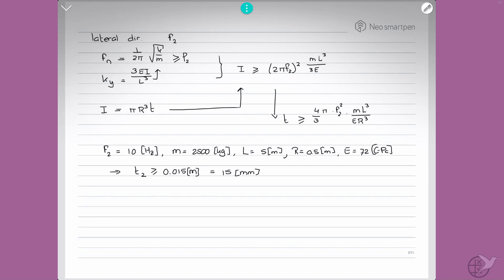So we now have found two values. In axial direction, T1 must be larger or equal to 2.1 millimeters. And in lateral direction, T2 must be larger or equal to 15 millimeters. But which one is governing? The largest one here is governing, as that is the only one that meets both requirements.